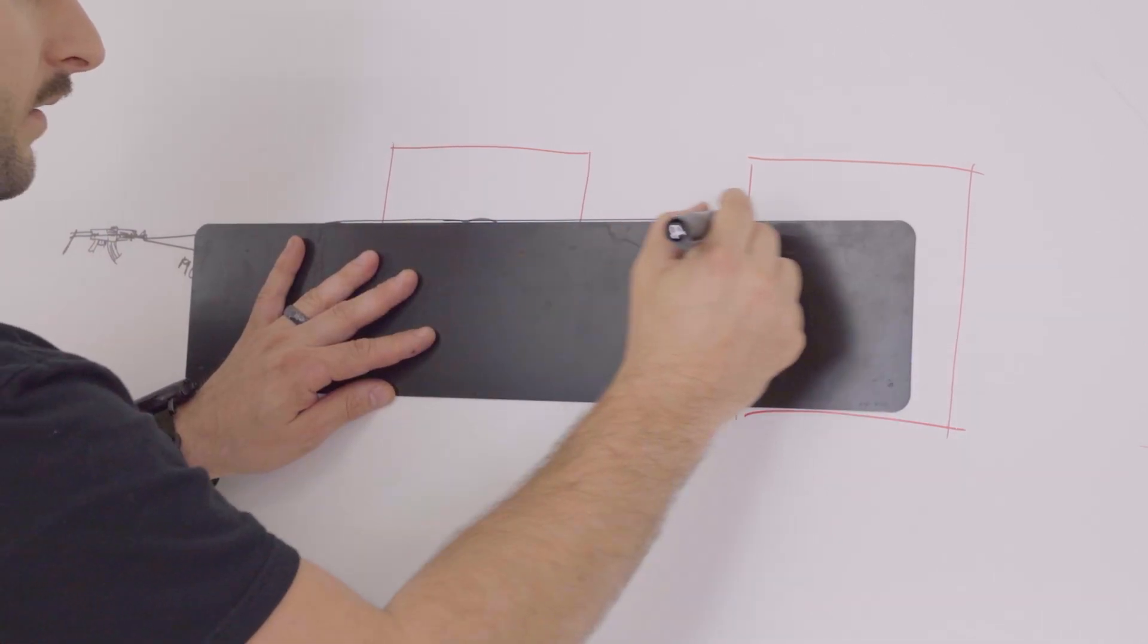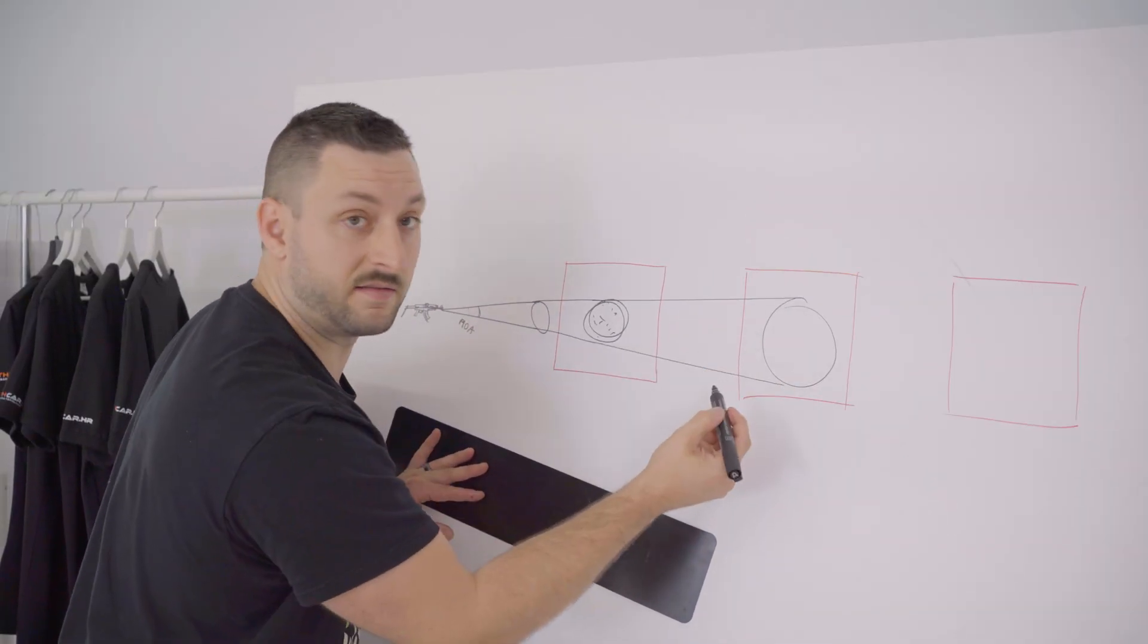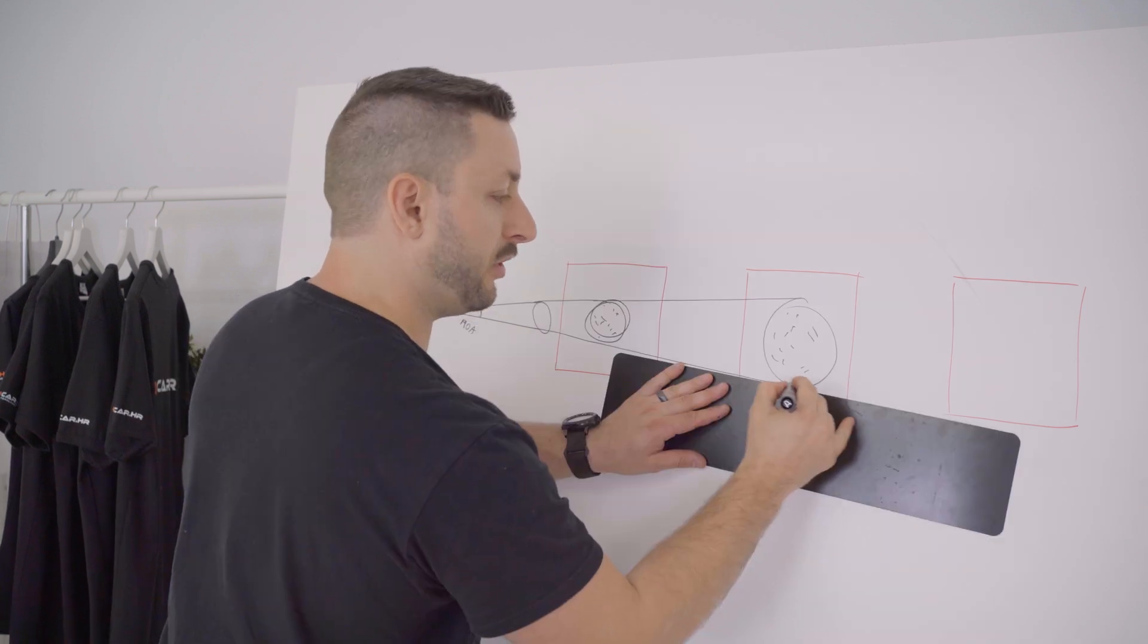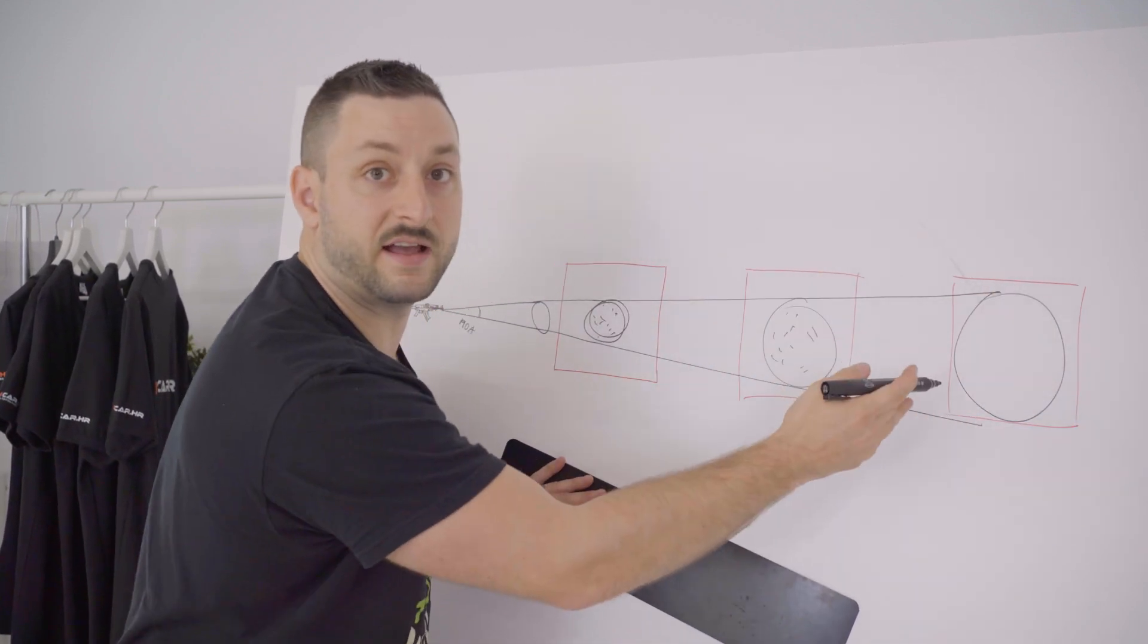So what happens is that double the distance, the grouping will be double the size. And then of course if we triple the distance we triple the size of the grouping.